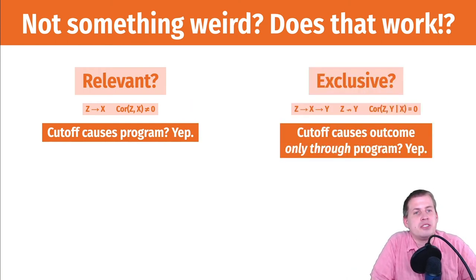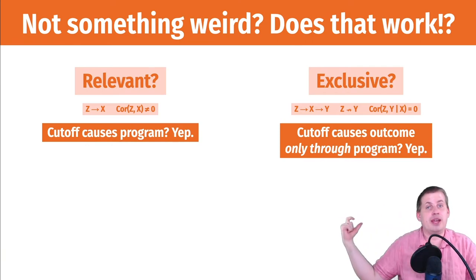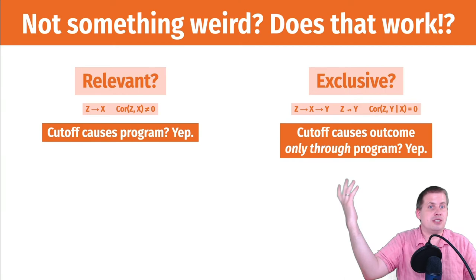The excludability principle, or exclusion principle here, the cutoff causes the program, or causes the outcome only through the program. And that is true. So being above the cutoff or below the cutoff causes whatever outcome you have, but it's only because you get access to the program or you don't get access to the program. And it works as an instrument. If you can think of other stories that the act of being above or below a cutoff, not like your ability to score well on the test, just like the cutoff exists, that's just kind of its own thing.